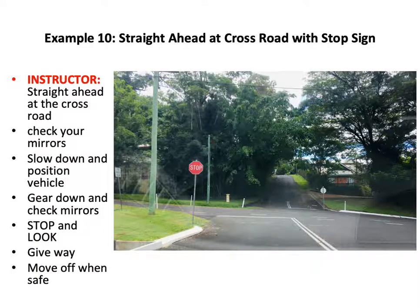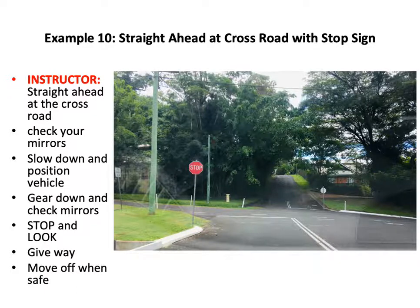Example ten: straight ahead at crossroad with stop sign. The road on the other side of the crossroad also has a stop sign with a stop line and two double lines. Straight ahead at the crossroad, please. Check your mirrors, slow down and position the vehicle — a little bit to the right of the lane, which would allow motorbikes coming from behind wanting to take a left turn to slip up there safely. Gear down, check mirrors, stop and look, give way, move off when safe to do so.